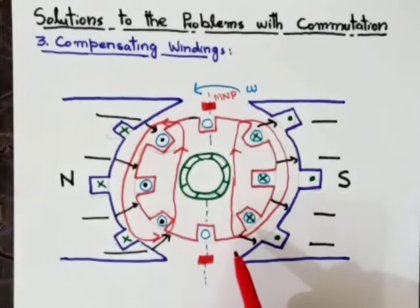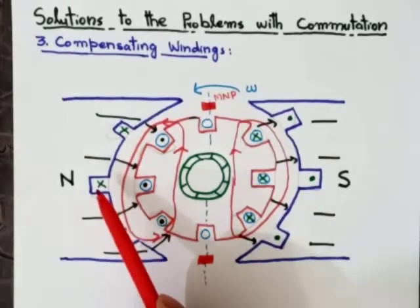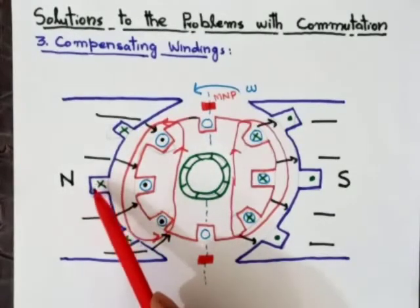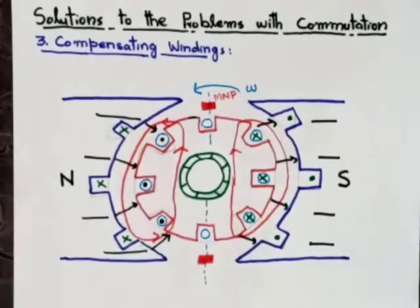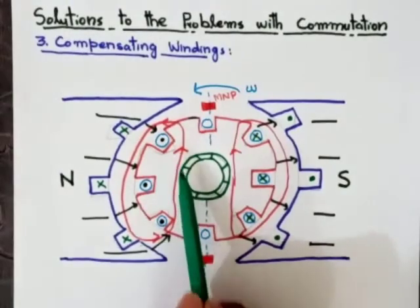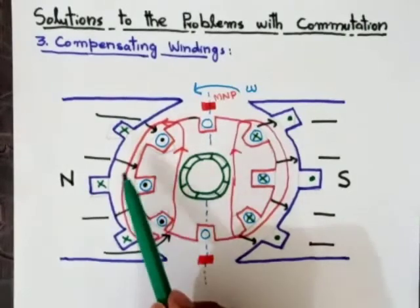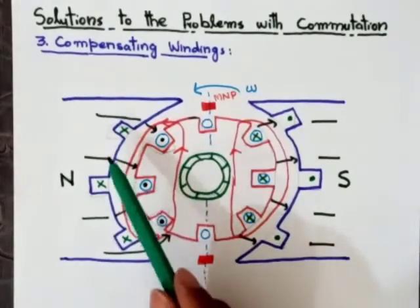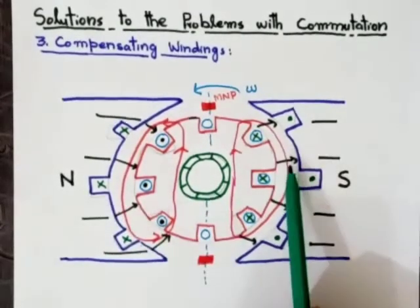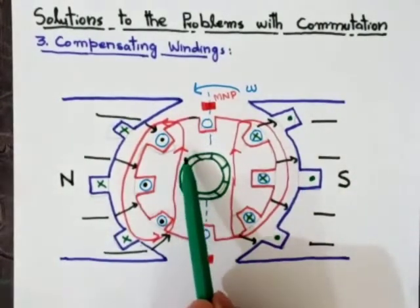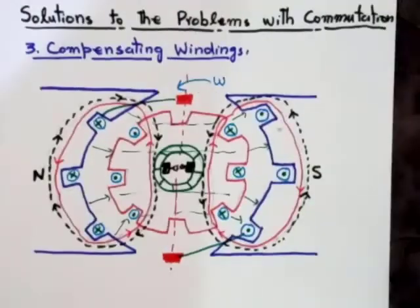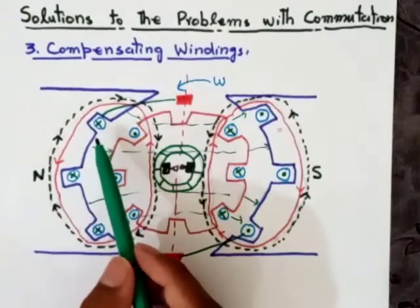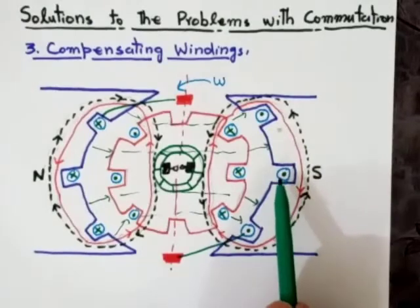That's why three slots have been put under the North pole and three slots under the South pole — to cancel out the armature flux, which is the compensating winding. We want to cancel out the armature flux because it causes the flux weakening problem. The conductors placed in these slots under the pole faces are called the compensating winding.